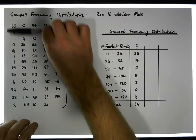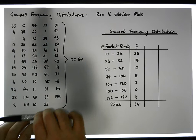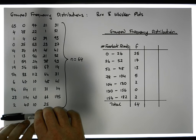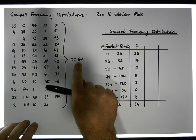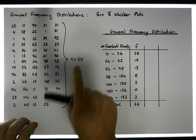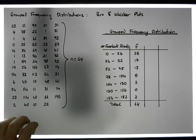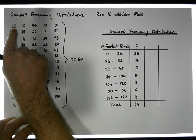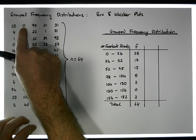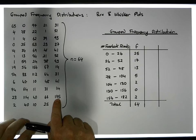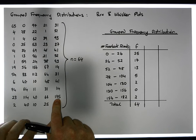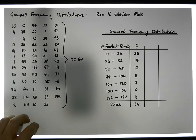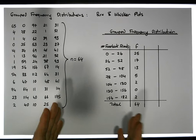What we want to do now in this video is work from a particular raw data set. This data set contains responses to a question I asked 64 students at the National College of Ireland — how many Facebook friends did they have? Answers ranged from zero friends up to 175 friends.